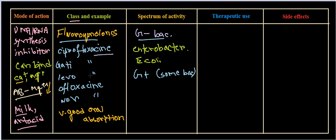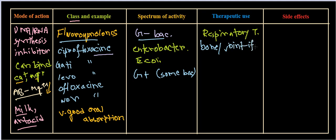The therapeutic uses of these antibiotics range from respiratory tract infections and ear infections to bone and joint infections and diarrhea, which is a major gastrointestinal problem. They can also be used against urinary tract infections and skin infections.